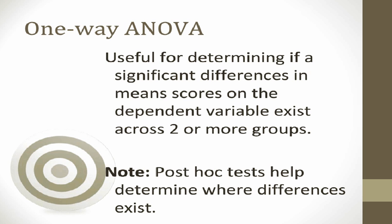In the term one-way between groups ANOVA, 'one-way' indicates that there is only one independent variable. The 'between groups' part means that you have different subjects or different cases in each group.